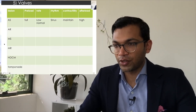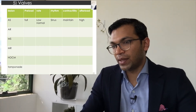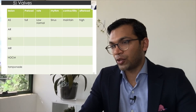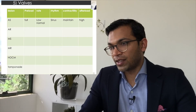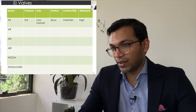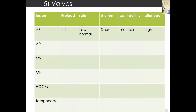When I was a trainee I found it useful that every valve lesion, HOCM, and tamponade has certain priorities. Talking in terms of preload, rate, rhythm, contractility, and afterload communicates a lot. For aortic stenosis: 'slow, sinus, squeeze' — full preload, low-normal heart rate, sinus rhythm is critical, maintain contractility, and high afterload to maintain coronary perfusion pressure.